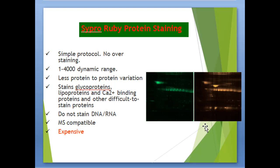SYPRO Ruby protein staining has a simple protocol with no over-staining, a one-to-four-thousand dynamic range, and less protein-to-protein variation. It stains glycoproteins, lipoproteins, calcium-binding proteins, and other difficult-to-stain proteins. It does not stain DNA or RNA, is mass spectrometry compatible, but it is expensive.